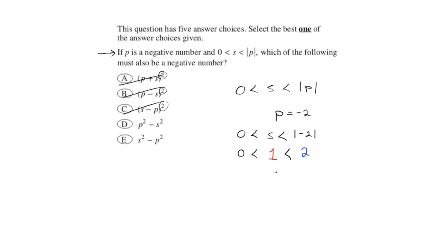We've got p equals negative 2 and s equals 1. Now let's see what we get for these options here.